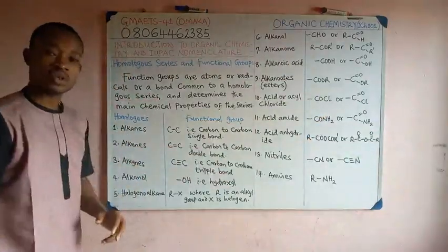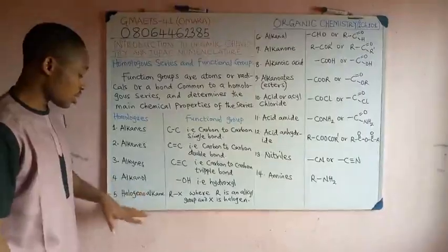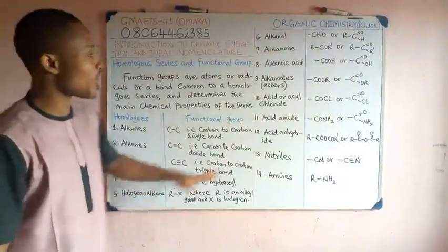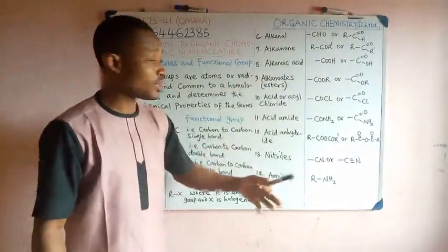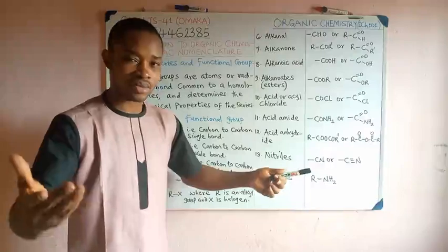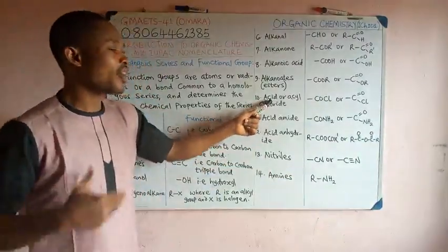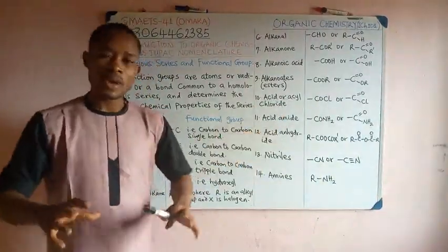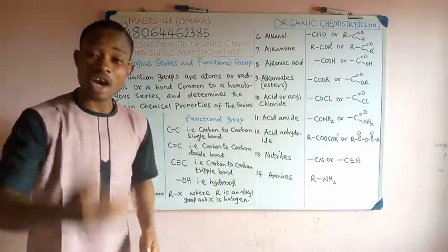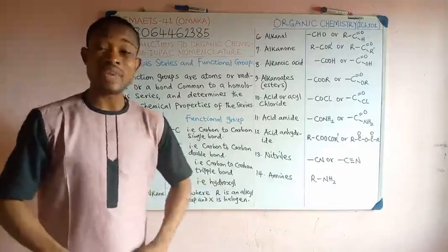On the board here, we have 14 functional groups corresponding to 14 different homologues that you are going to study in organic chemistry 1. Starting with alkanes, we have alkanes, alkenes, alkynes, alkanols, halogenyl alkanes, the alkanals, the alkanones, the alkanoic acid (carboxylic acid), the alkanoids which you know as esters, the acid chloride also called acyl chloride, the acid amide, the acid anhydride, the nitriles, and the amines.